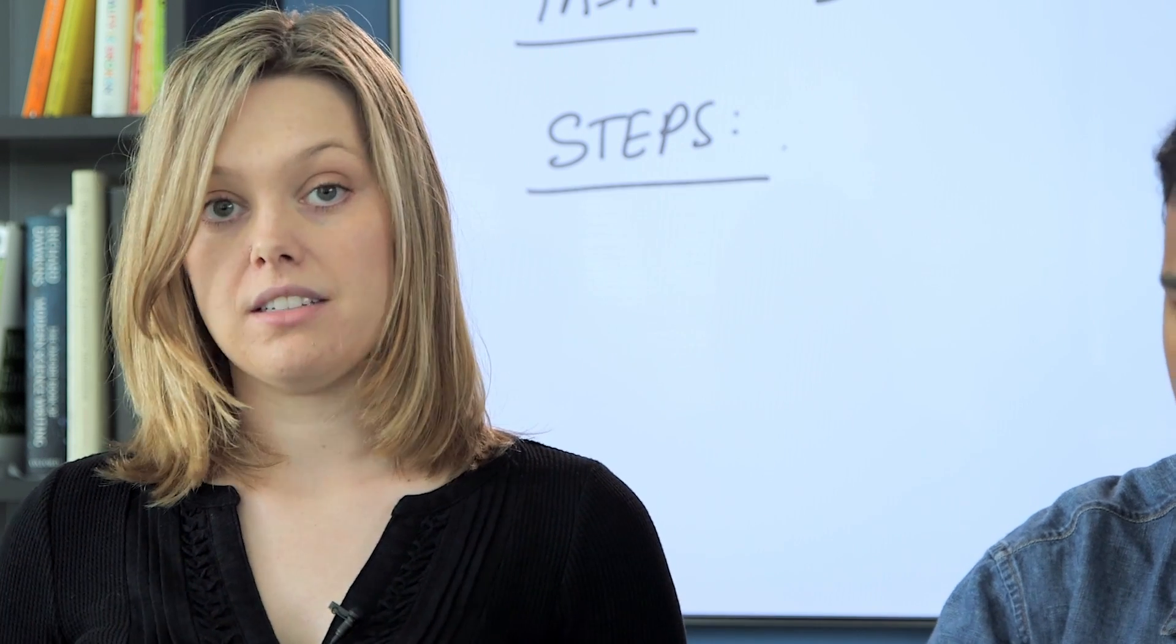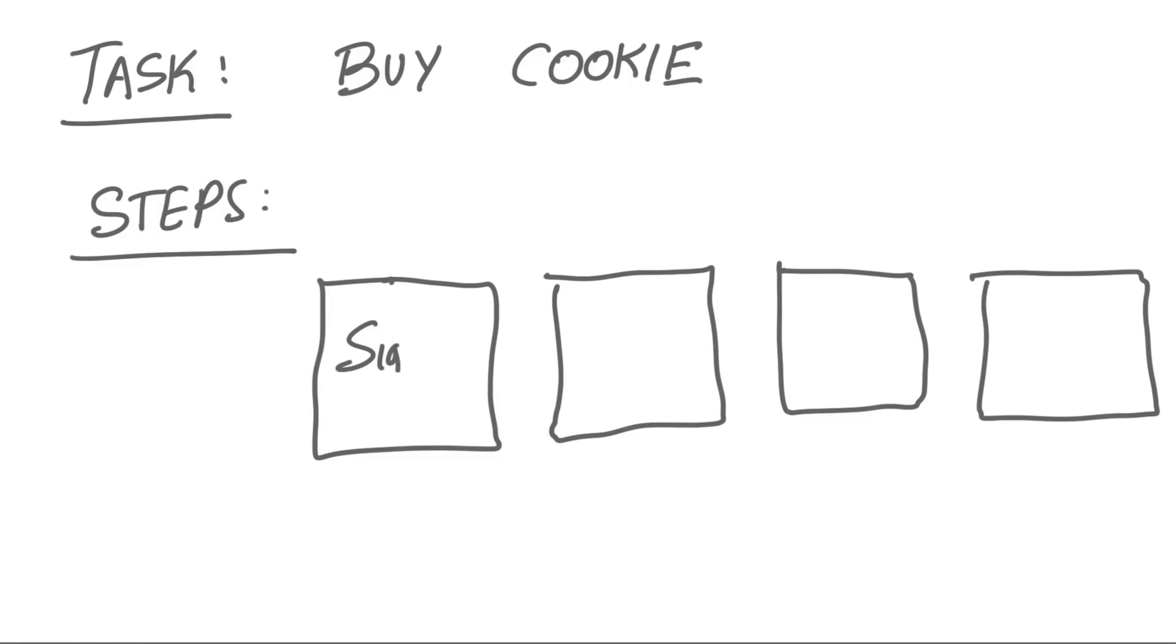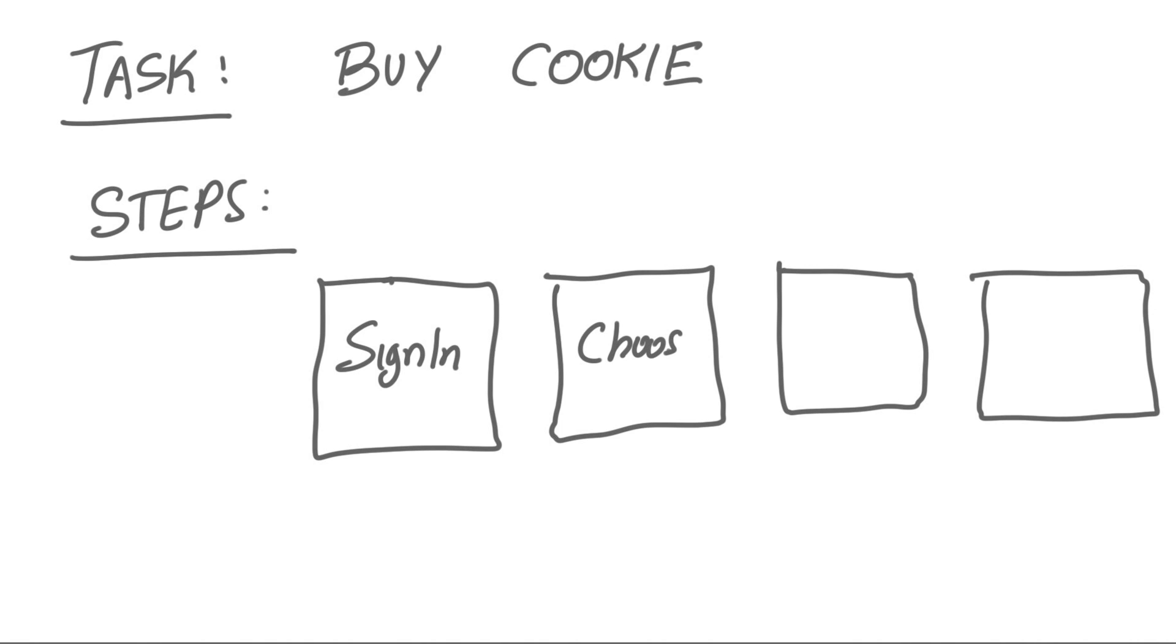So here's how you really get started. Imagine there's a task that your user wants to complete. So for this example it's, I'm hungry for cookies, I want to get some and eat the cookies basically. So then you think about what steps does your user need to go through to complete this task. This is an easy example because we only have one task. So the steps would be sign in, decide which cookies you want, pay for your cookies and then eat the cookies.